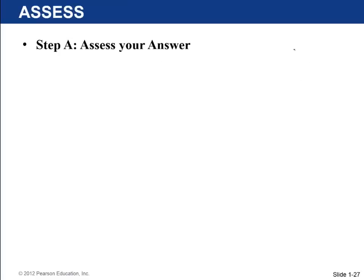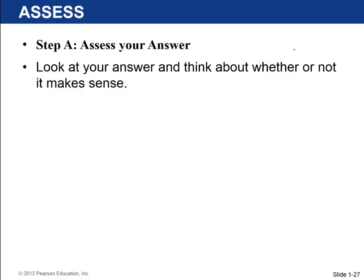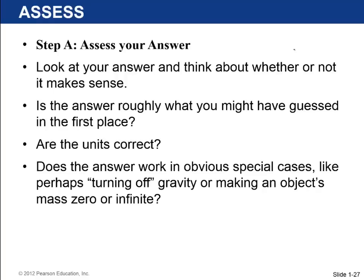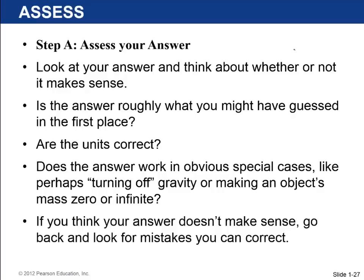And then step A, the last step, is to assess your answer. Look at it. Does it make sense? Is it what you might have guessed in the first place? If the height of the Dubai Tower came out to be 3 million kilometers, that would probably be not what you'd expect. The units, do they match up with the dimensions? Sometimes you can look at special cases. So if you turn off gravity or if you think of colliding an object that might have zero mass or infinite mass, if you're looking at your symbolic answer, does it make sense in certain special cases? If, for some reason, you think your answer doesn't make sense, it's possible you made a mistake earlier and you can go back and correct it.